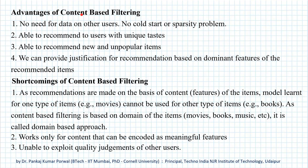There are several advantages of content-based filtering. First, we don't need data on other users, so we don't face the cold start problem or the sparsity problem. Second, content-based filtering is able to recommend to users with unique tastes because we are training a user-specific classifier. It is also able to recommend new and unpopular items because recommendations are made using content or features of the item. Additionally, we can provide justification for recommendations based on dominant features of the recommended items — identifying which features drive the like or dislike prediction for each user.